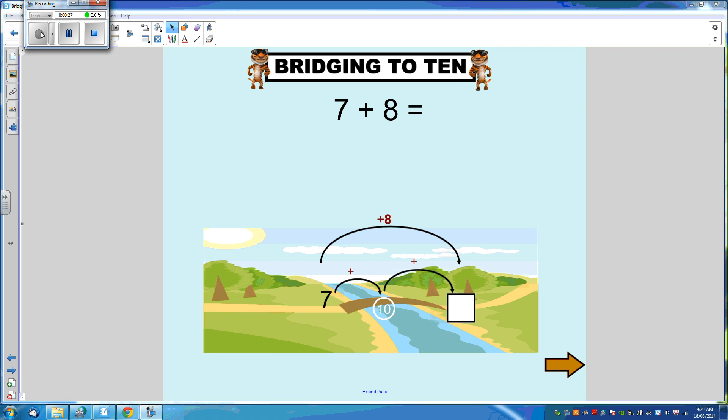So 7 plus 8. We know from our knowledge of our friends of 10 that 7 plus 3 will get us to 10. So let's stop on the bridge after we've added 3 and we've gotten to 10. Our question asks us to add 8.